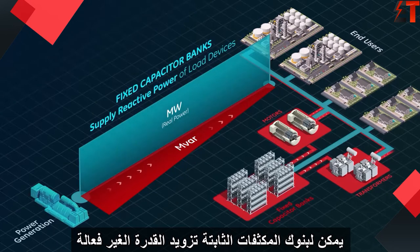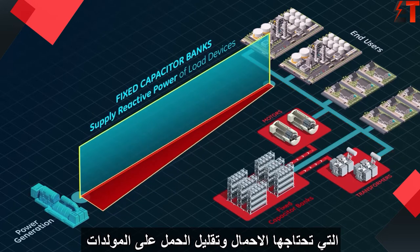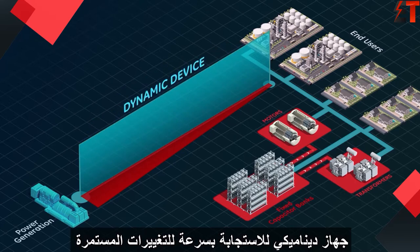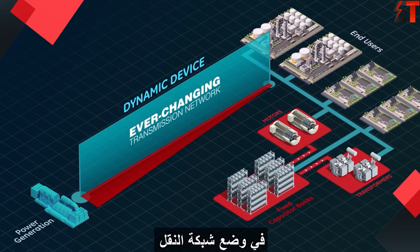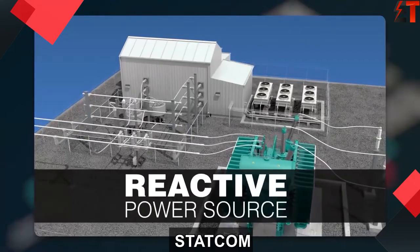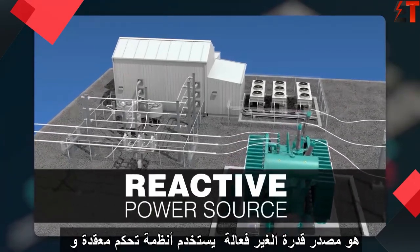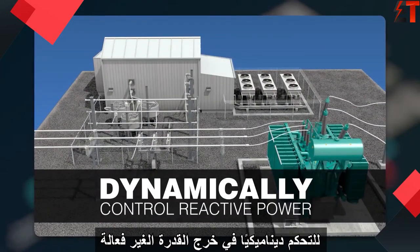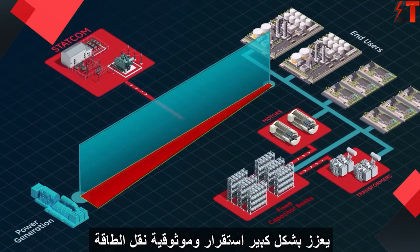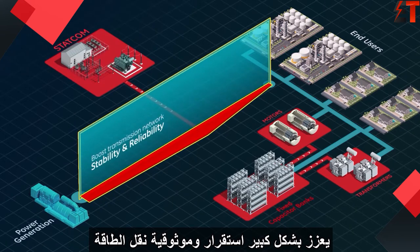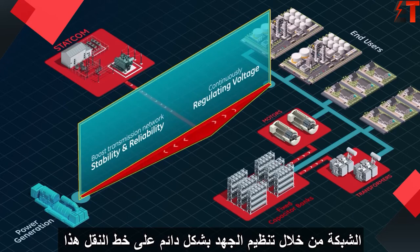Fixed capacitor banks can supply the reactive power needs of the load devices and reduce the load on the generators. However, a dynamic device is needed to rapidly respond to the ever-changing conditions of the transmission network. A static synchronous compensator, or STATCOM, is a reactive power source that uses complex control systems and IGBT switches to dynamically control reactive power output. STATCOMs can significantly boost the stability and reliability of the power transmission network by continuously regulating the voltage on the transmission line.